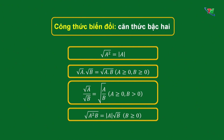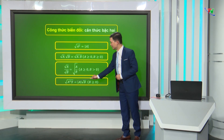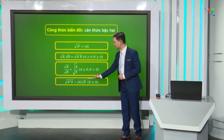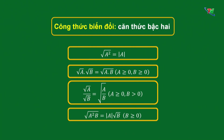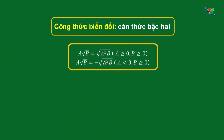Khi đưa thừa số ra ngoài dấu căn, A bình phương ra ngoài dấu căn chúng ta được giá trị tuyệt đối của A. Tiếp theo là công thức đưa thừa số vào trong dấu căn: A·√B = √(A²·B) với điều kiện A ≥ 0, B ≥ 0. Và A·√B = -√(A²·B) trong trường hợp A < 0, B ≥ 0.